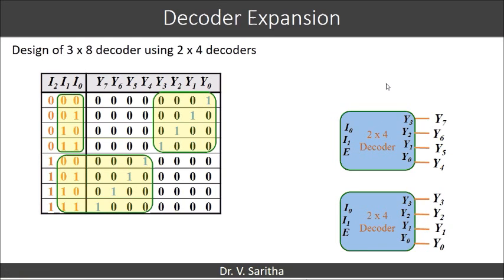We are considering two 2x4 decoders. One decoder output is y0 to y3 and another decoder outputs are y4 to y7. We are having 3 inputs for the 3x8 decoder: I2, I1, I0. We can see that I1 and I0 are inputs for both the decoders. Let us connect I1 I0 to both inputs of the both the decoders.